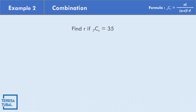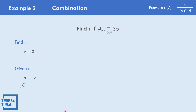In example number 2, find R if the combination of 7 objects taken R at a time equals 35. The given values are n equal to 7, and C(7,R) equals 35. Let us find the value of R.